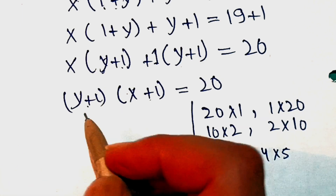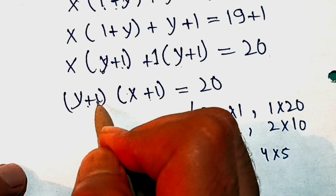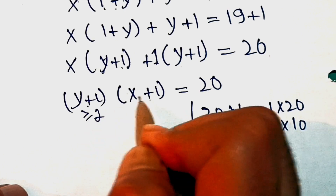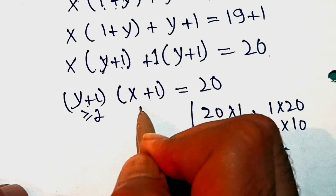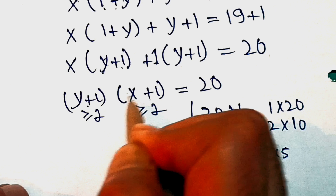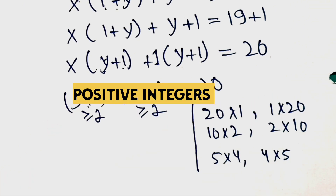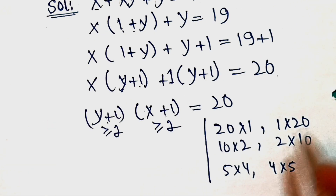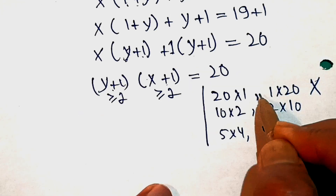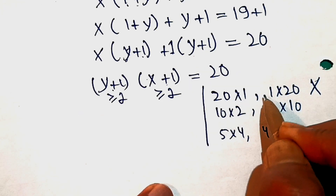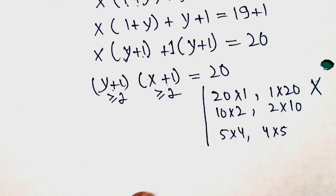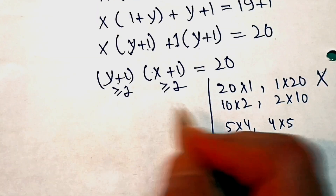Since x and y are integers, (y plus 1) is always greater than or equal to 2, and similarly (x plus 1) is always greater than or equal to 2. That means the first case — where one factor is 1 — is rejected because 1 is less than 2.